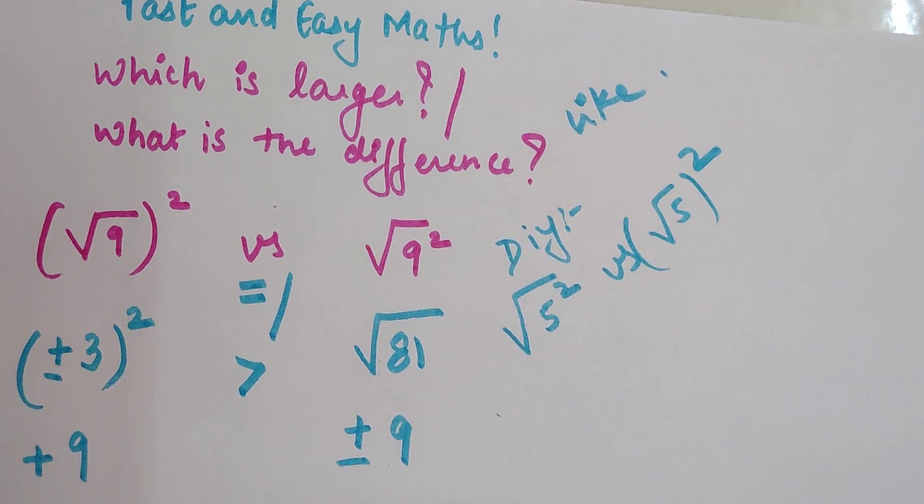You have to tell me that amongst these two, (√5)² versus √(5²), which one is what? Which is greater or what are the values?